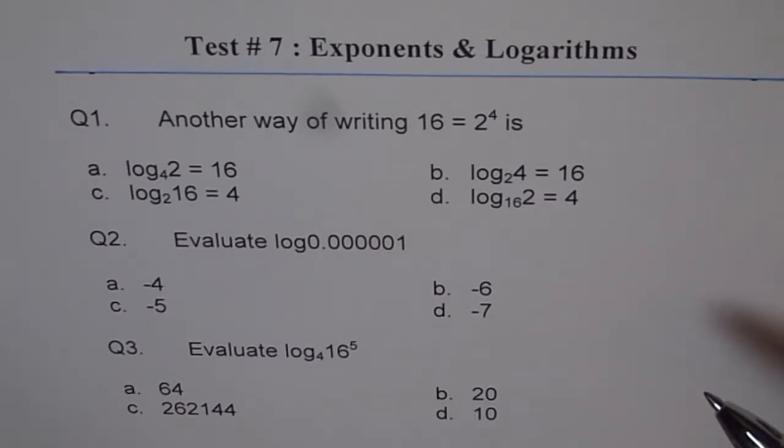Question 2. Evaluate log 0.0001. Choices are minus 4, minus 6, minus 5, minus 7. Question 3. Evaluate log to the base 4 of 16 to the power of 5. Choices are 64, 20, 262144, and 10.